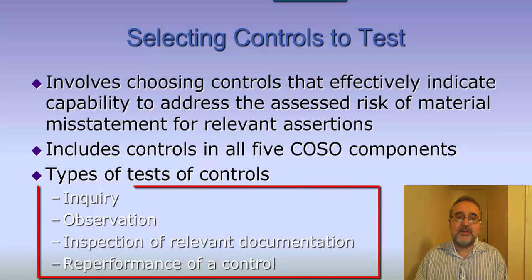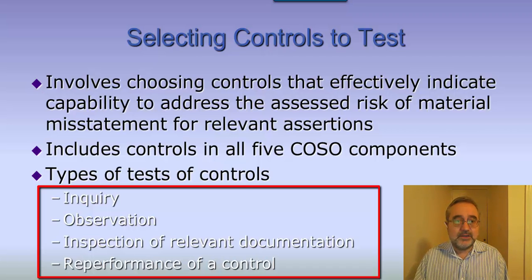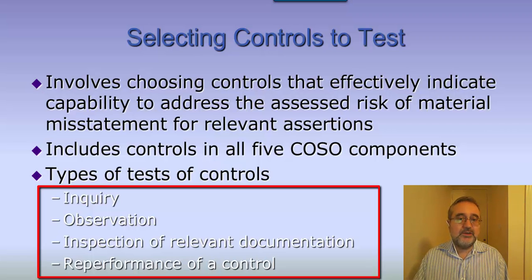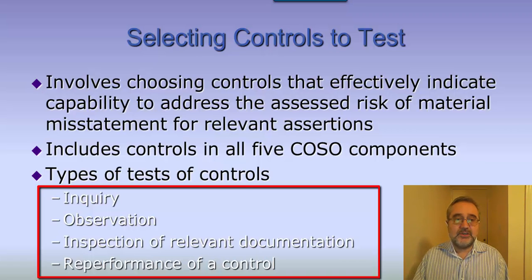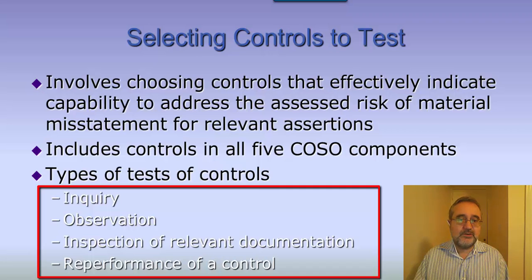The types of control testing we perform include primarily inquiry and observation — asking about and understanding what controls are in place, observing them in process to make sure they are designed and operating correctly. We also inspect relevant documentation. For example, if a control requires two signatures on any check over $10,000, we will inspect checks over $10,000 to determine whether the control is operating effectively.